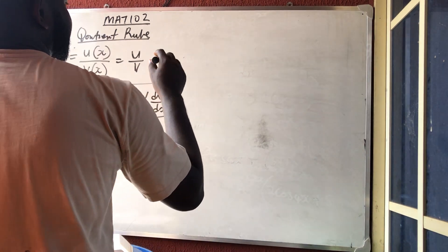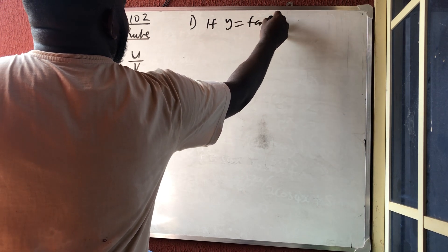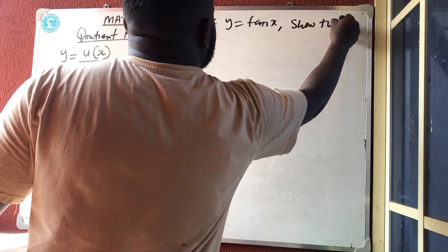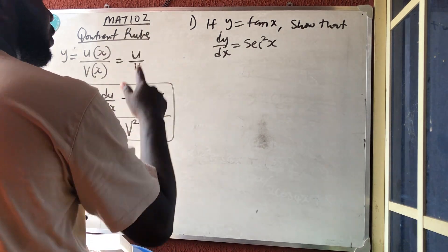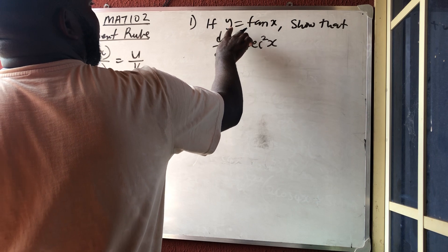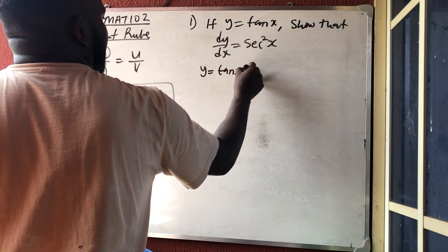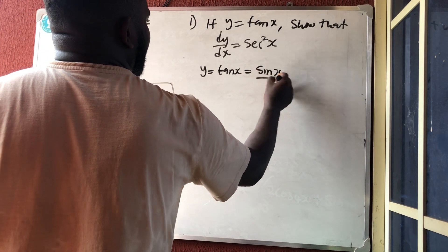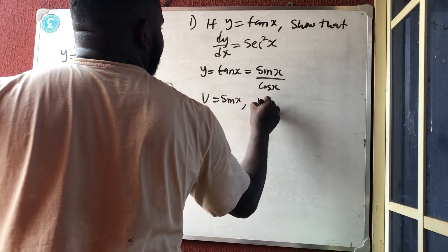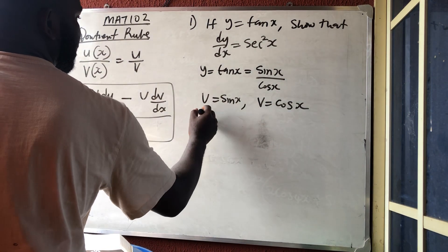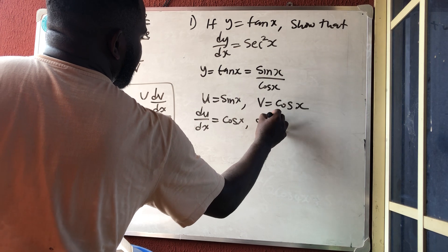The first example: if y equals tan x, show that dy/dx equals sec²x. This is part of the standard derivatives. Let's prove it. We know from trigonometry that tan x equals sin x over cos x. So automatically, u equals sin x and v equals cos x.